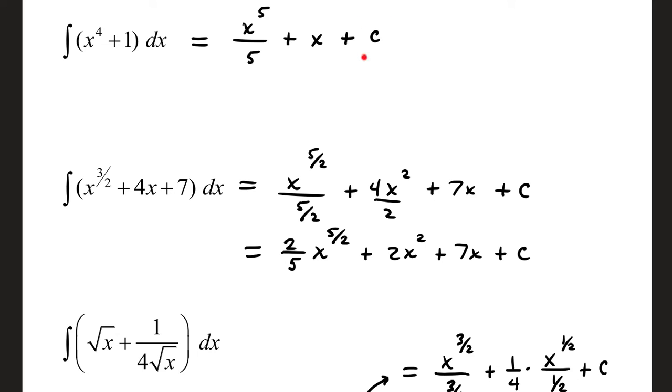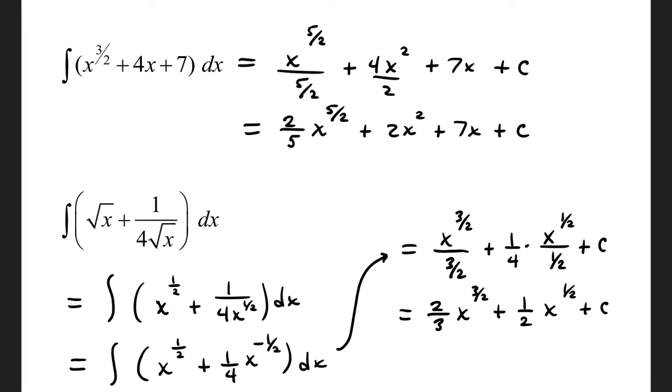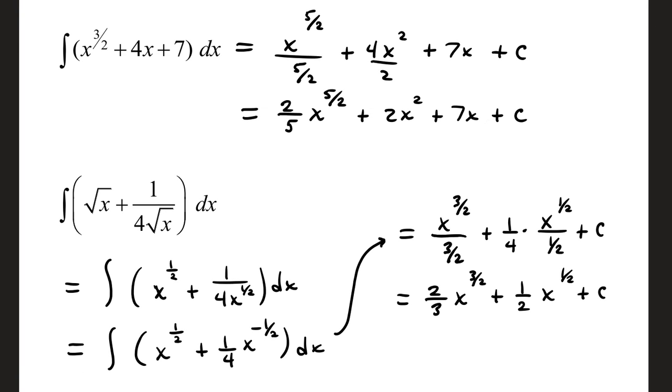In the second example, we're taking the general antiderivative, the indefinite integral of x to the three-halves plus four x plus seven. Three-halves plus one is five-halves divided by the result. Four x, when you add one, you get four x squared divided by the result. Seven's a constant, so stick a variable on it. Don't forget your constant of integration.